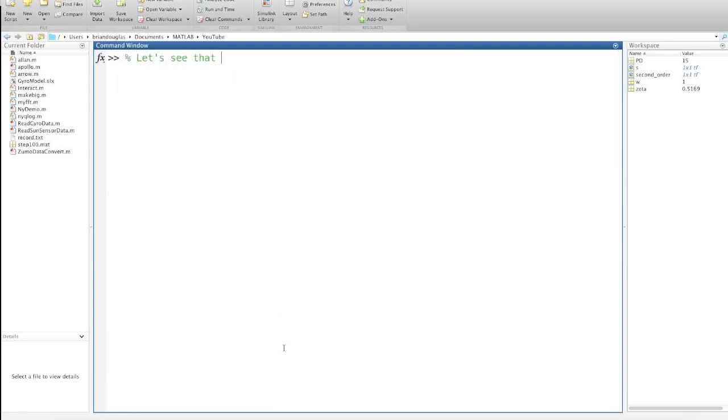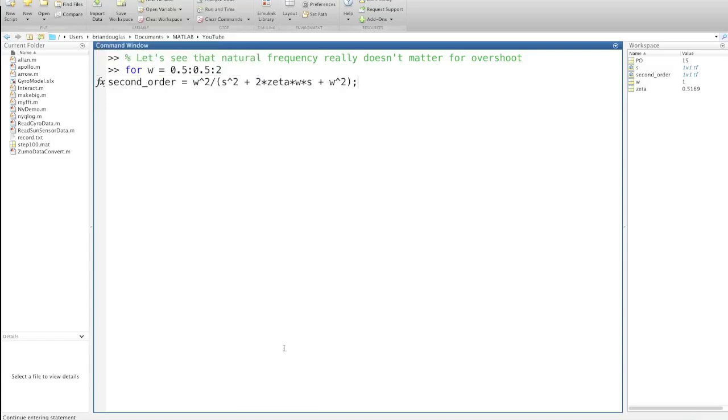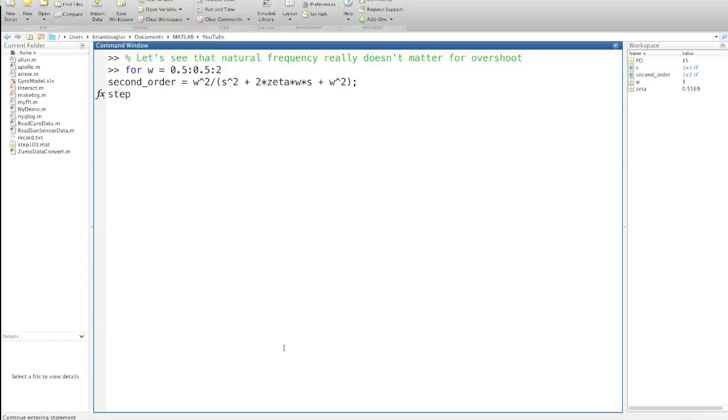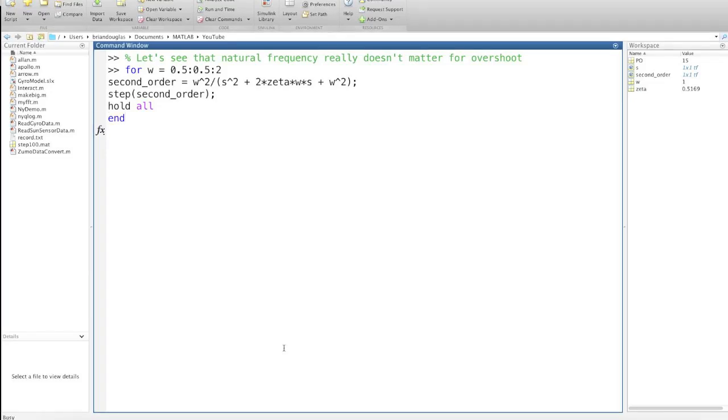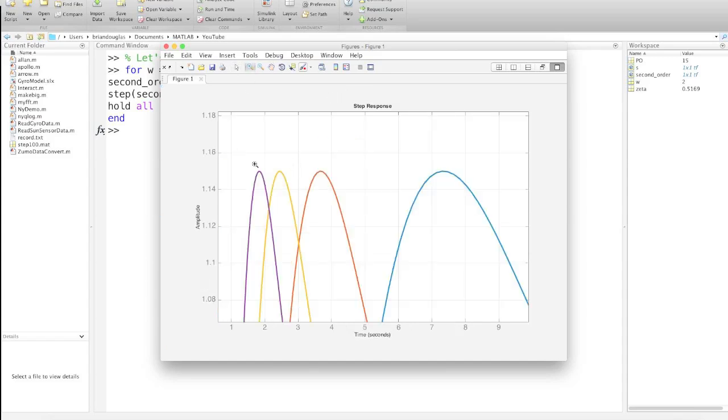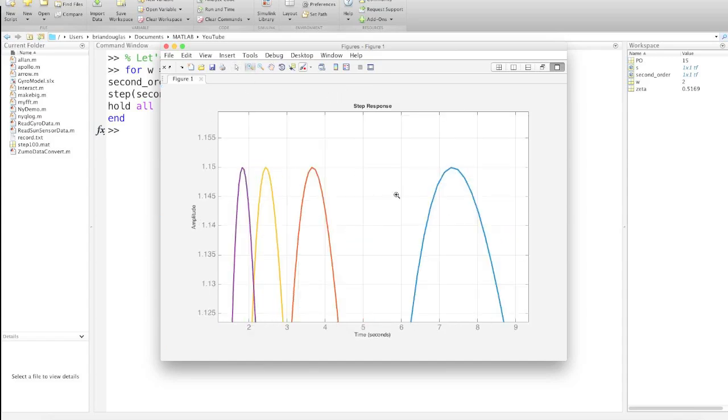Let's go back to the command window and verify that the natural frequency really doesn't impact the overshoot for a second-order system. I'll loop through 4 different frequencies: 0.5, 1, 1.5, and 2 radians per second. I'll recalculate the transfer function and plot the step response on the same graph over and over again. Here's what that looks like. All 4 responses have exactly 15% overshoot, and just the rise time and settling time was affected by the change in natural frequency.